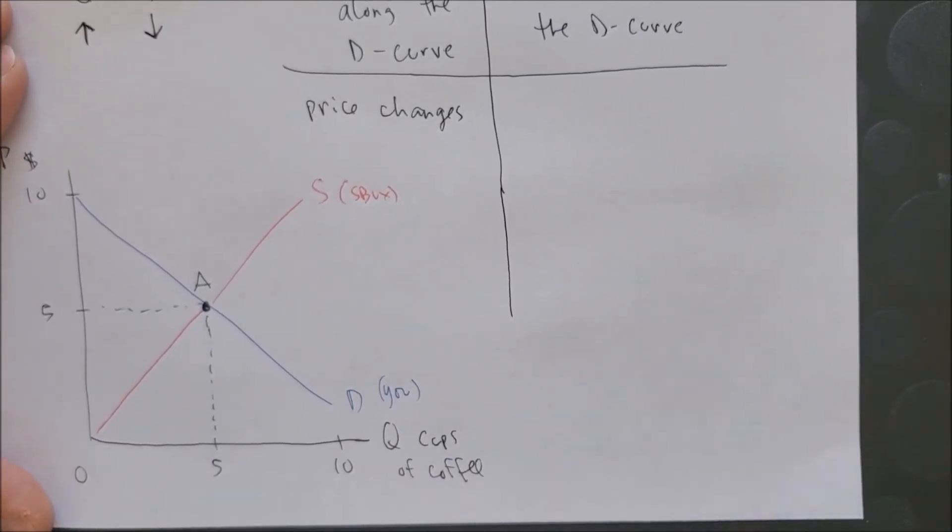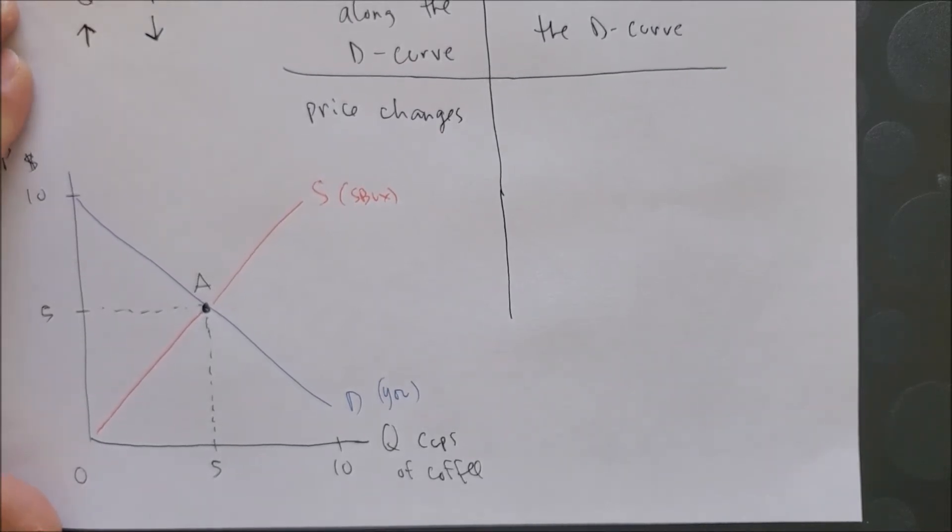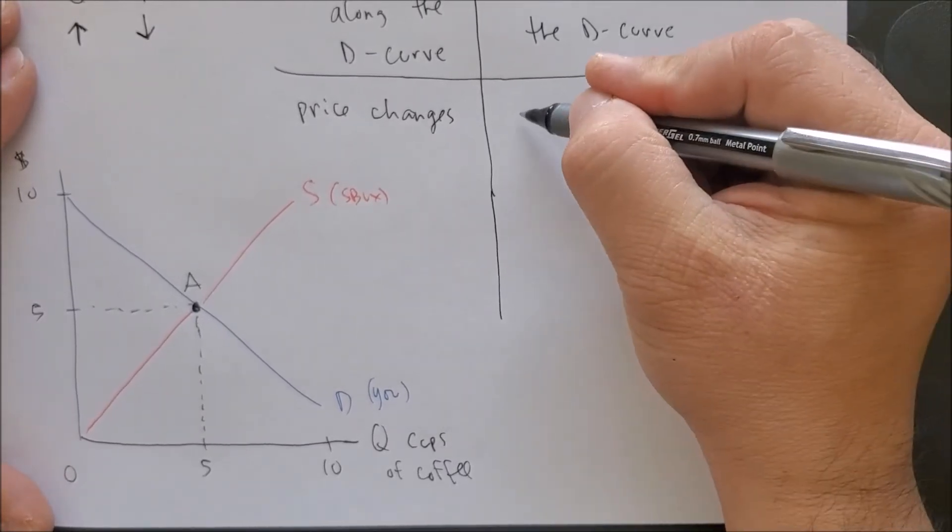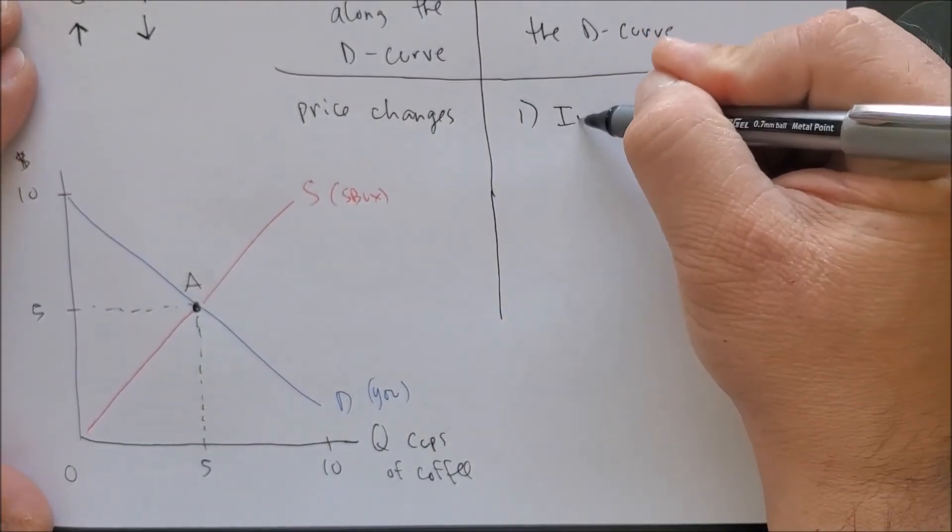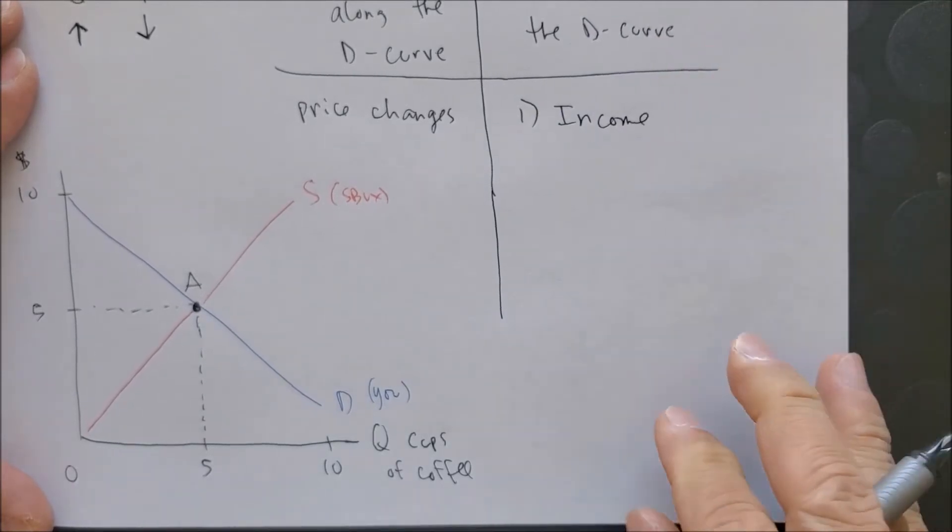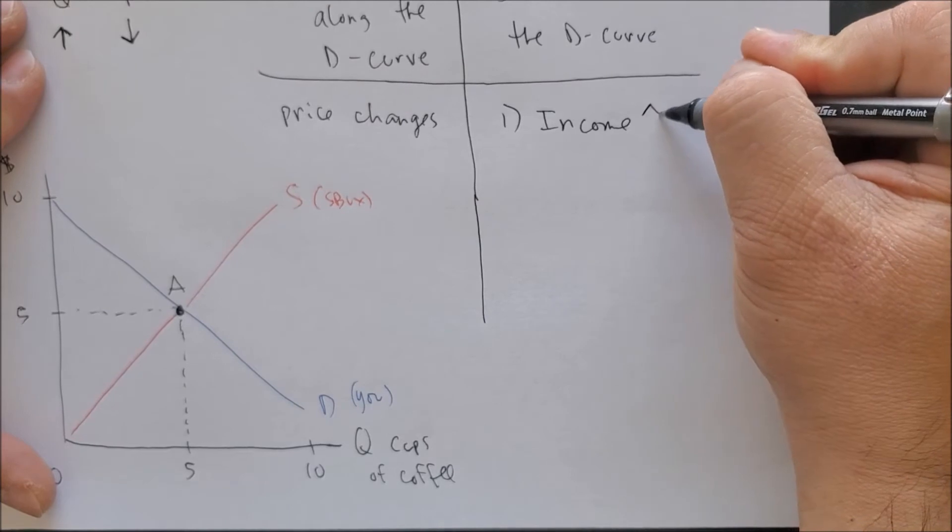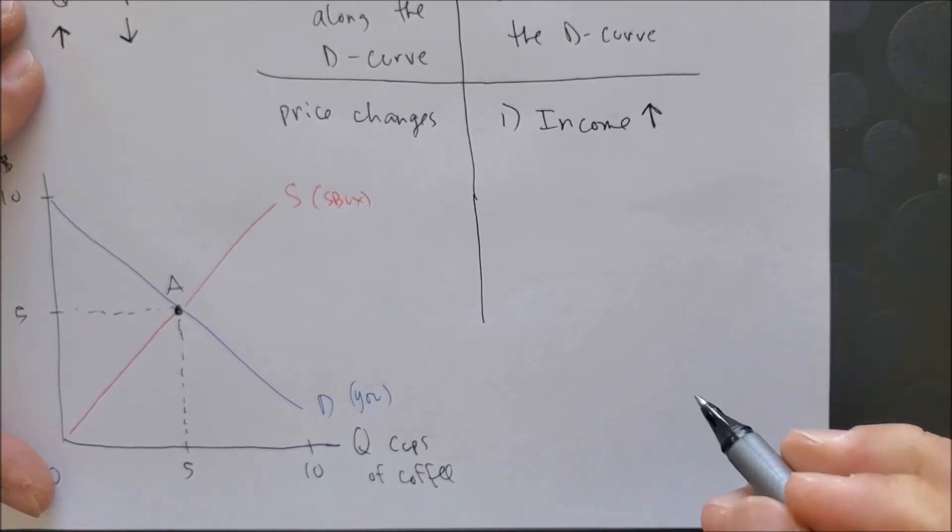So I'm going to show you the shifts in demand, thereby starting on the x-axis, thereby creating a new demand curve. And there are four main factors that would shift the demand curve. Number one focuses on your income. So when income increases, you are going to consume more goods.